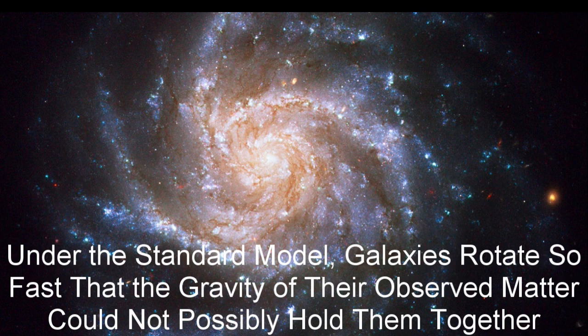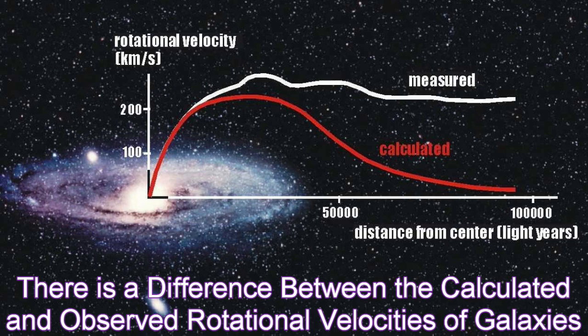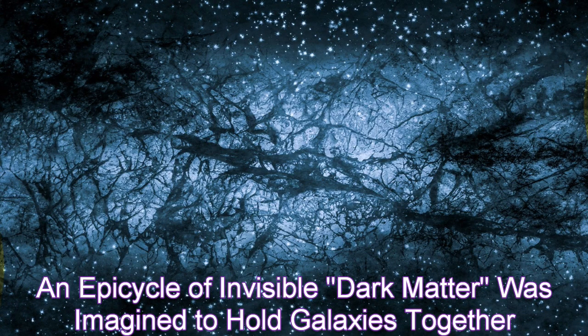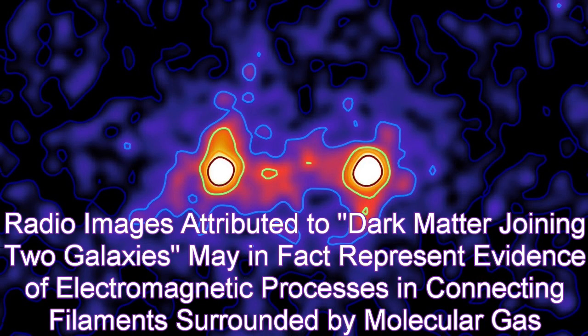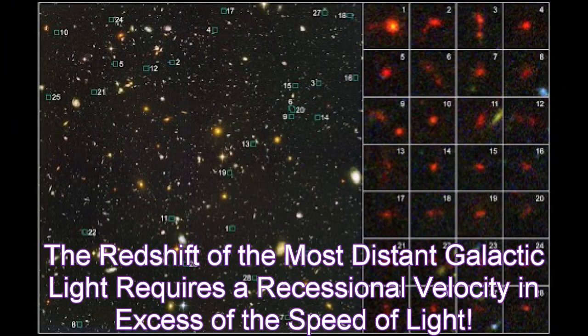Under the standard model, galaxies rotate so fast that the gravity of their observed matter could not possibly hold them together. There is a difference between the calculated and observed rotational velocities of galaxies. An epicycle of invisible dark matter was imagined to hold galaxies together. Radio images attributed to dark matter joining two galaxies may in fact represent evidence of electromagnetic processes and connecting filaments surrounded by molecular gas.